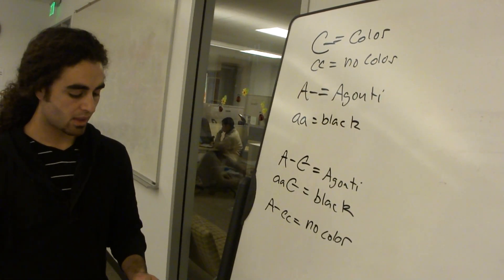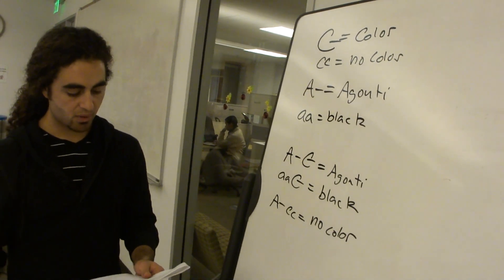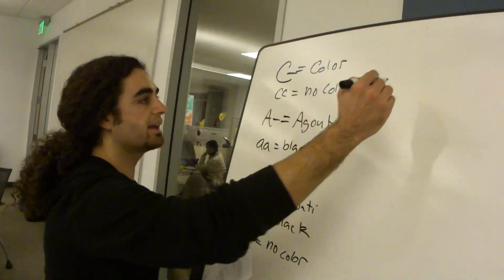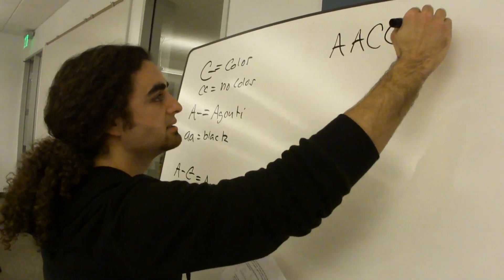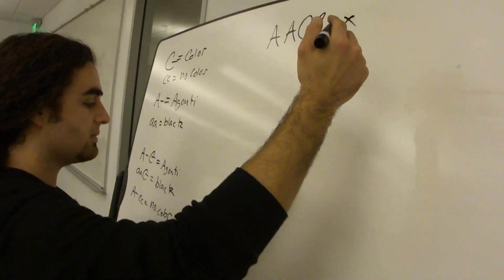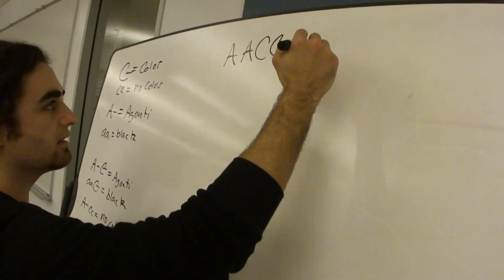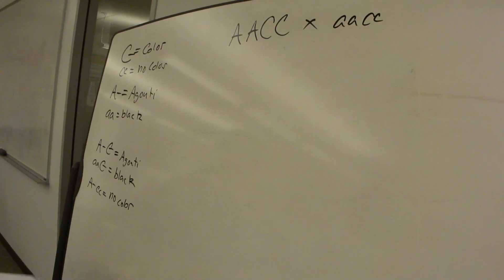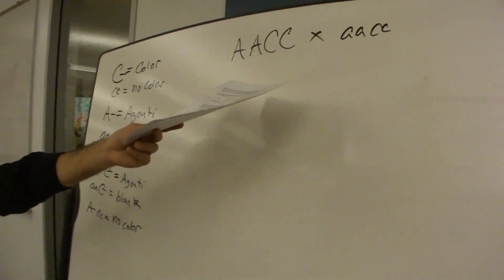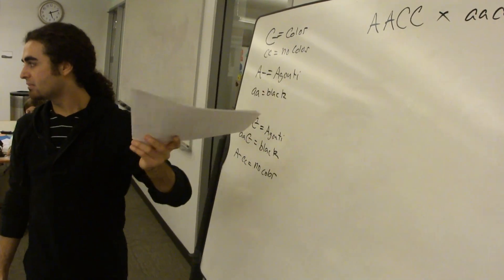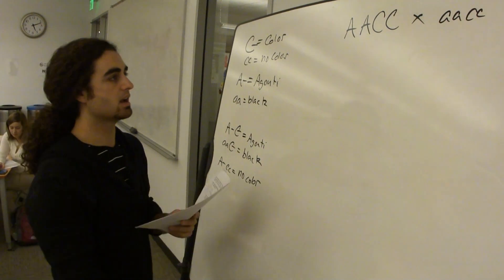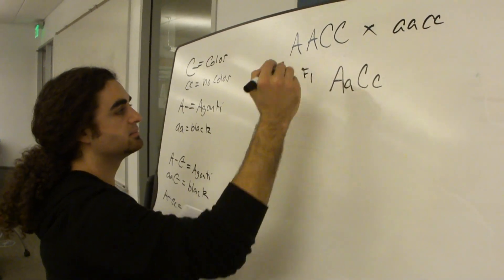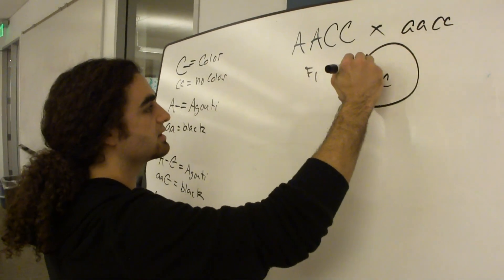So those are going to be the three things that we're going to be looking for after we do our dihybrid cross. So what F1 and F2 genotype and phenotype ratios are obtained from a cross between big A, big A, big C, big C, and little a, little a, little c, little c? Anytime we see true breeders crossing, we're going to get heterozygous. So this is our F1, and then it tells us to get our F2, so we're going to self-cross that.